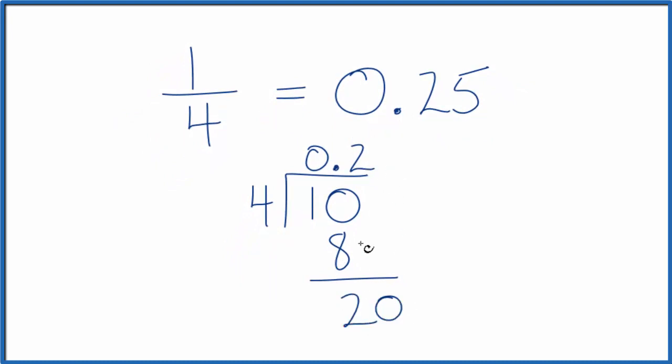We move over another decimal place. We have twenty. Four times five. That goes into twenty evenly. We're done.